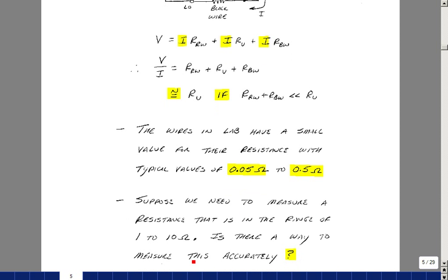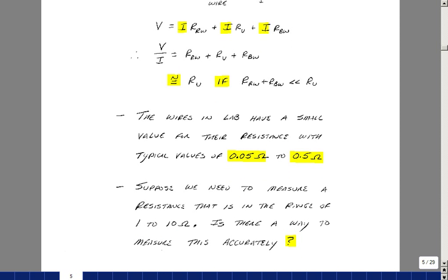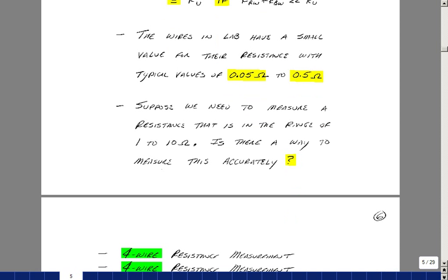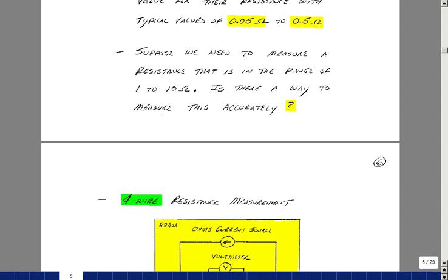What if you did have a small resistor, something maybe in a one to ten ohm range, where the wire resistance would be a significant part of it? One way is just to measure the wire itself, and then subtract off that from whatever reading you have. But there is another feature in the instrument that allows you to do that a little quicker.